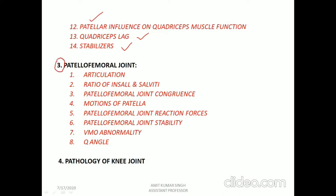Then we will move on to the patellofemoral joint, covering articulation and the ratio of insol and salvity — an important two-mark university question. We will also discuss patellofemoral joint congruence, motions of the patella, joint reaction forces, patellofemoral joint stability, VMO (vastus medialis oblique) abnormality, Q angle, and further we will proceed with the pathology of the knee joint.